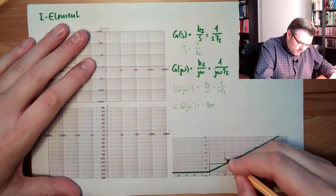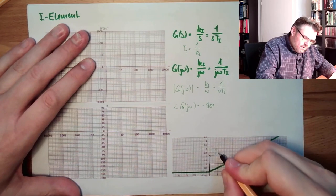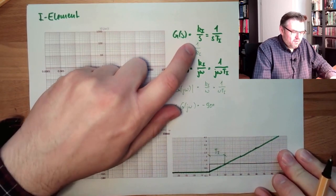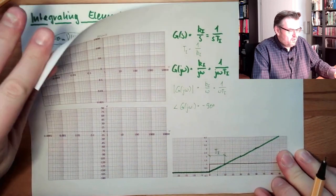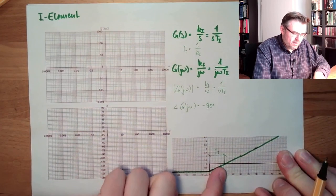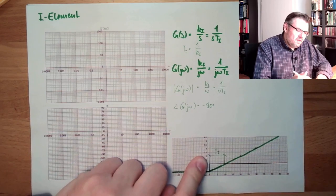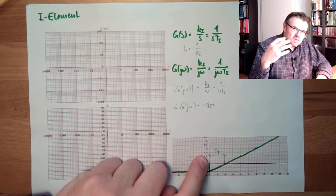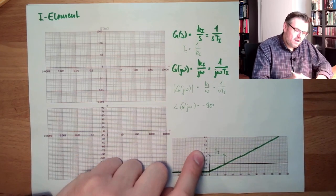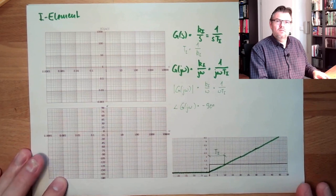One interesting thing here is this time — this is TI. In our example, TI equals 1 divided by KI, and KI was 1/10, so TI equals 10. And really it is 10. This is why the integration time is often used — because you can clearly see it in the step response. You record the step response of an element and you can directly read off TI.